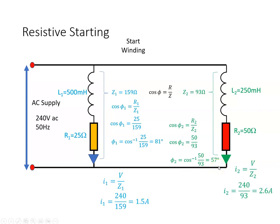So the current in the run is V over Z1 which is 240 volts divided by 159 ohms and that gives me 1.5 amps, and on the start winding it is 240 volts over 93 ohms and that gives me 2.6 amps.